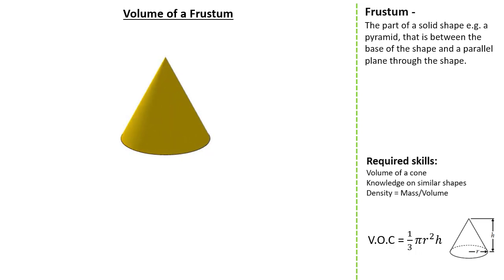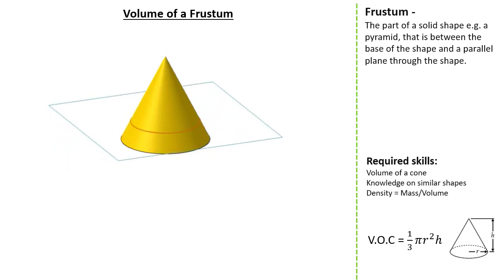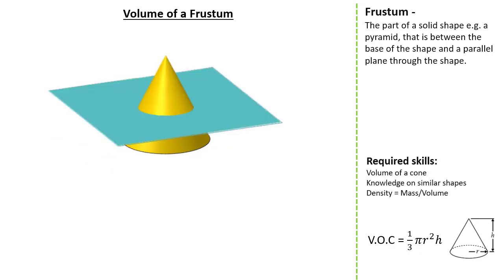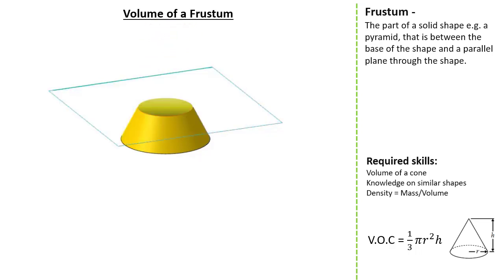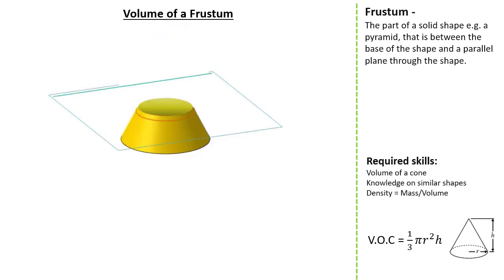Let's look at a cone as an example. Here I am going to show you a plane — think of a plane like a three-dimensional line. As you can see, the plane is always parallel to the base of our cone. Now as I cut and remove the top of our cone, I am left with a frustum. This is the shape that is made from the base of the cone to the plane.